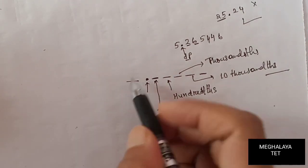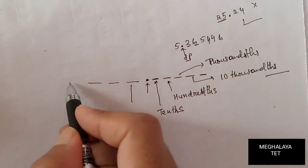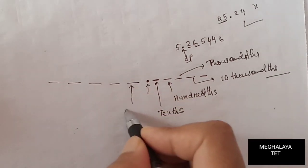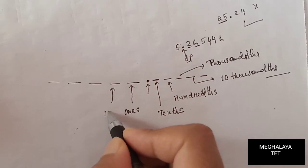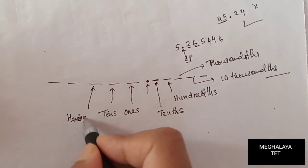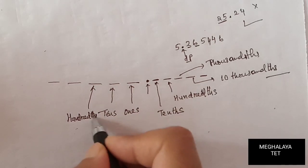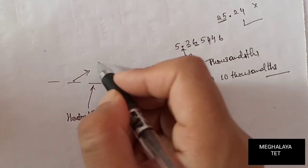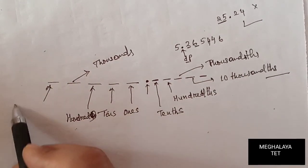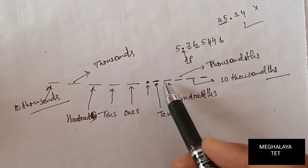Before the decimal point we have: ones place, tens place, hundreds place, thousands place, and ten-thousands place. After the decimal point, the place names get 'ths' added — so thousands becomes thousandths, and so on for each position.